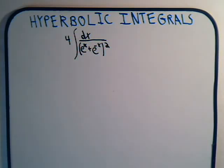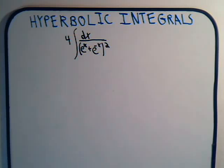We're going to look at some hyperbolic integrals. Here we have one where we have the integral of dx divided by e to the x plus e to the minus x, squared, and everything is multiplied by 4.